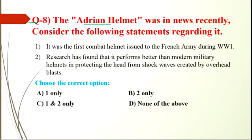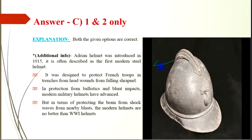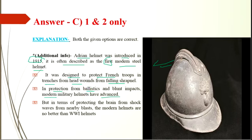Question number 8: the Adrian helmet was recently in news. Statement 1: it was the first combat helmet issued to the French army during World War I. Statement 2: research has found that it performs better than modern military helmets in protecting the head from shock waves created by overhead blasts. Both statements are correct, so the option will be C. The Adrian helmet was introduced in 1915 and is often described as the first modern steel helmet. It was designed to protect French troops in trenches from head wounds. While modern military helmets are more advanced in protection from ballistic and blunt impacts, in terms of protecting the brain from shock waves from nearby blasts, modern helmets are no better than World War I helmets.